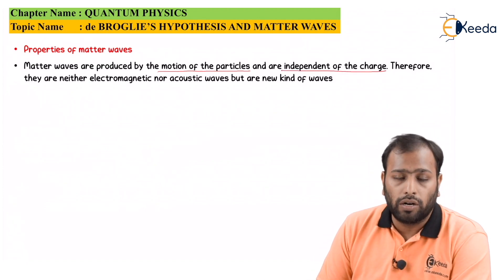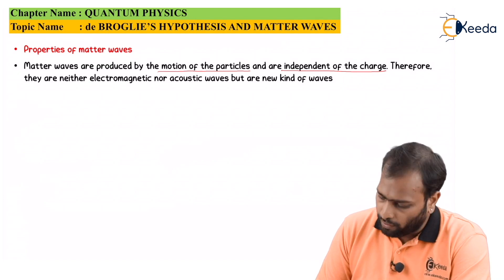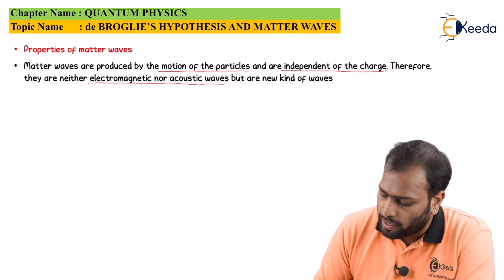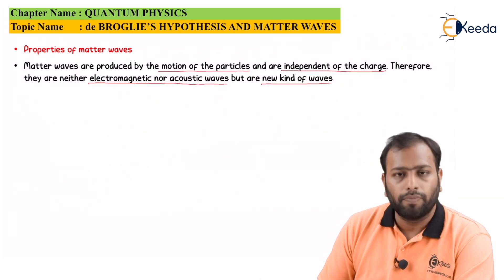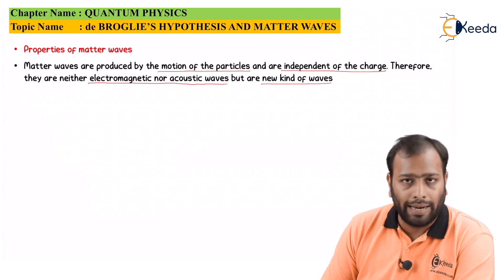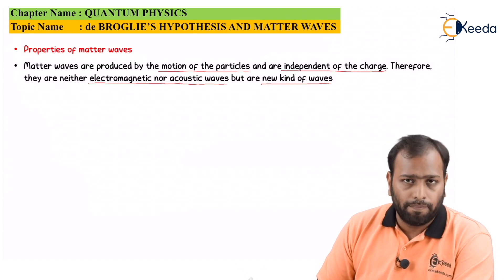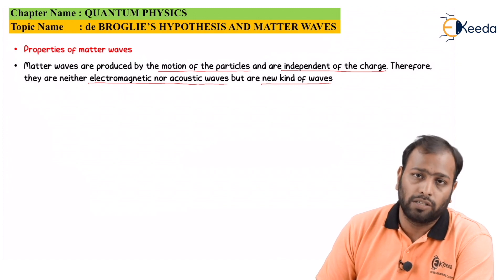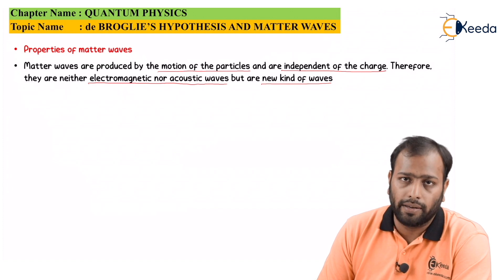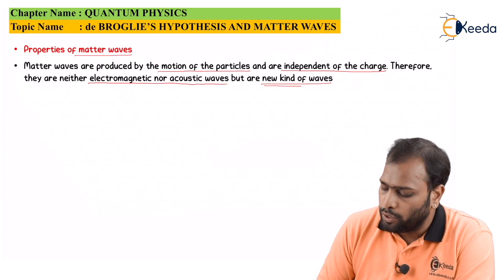Matter waves do not depend upon the charge — be it positive, negative, or even neutral. Therefore, they are neither electromagnetic nor acoustic but are a new kind of waves. Since they don't have properties similar to electromagnetic or longitudinal waves, they are provided a separate category called matter waves.